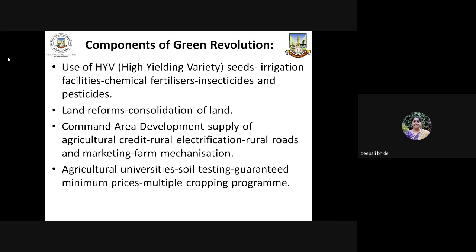All these changes were necessary to bring in a revolution in agricultural production. Simultaneously, there was development of agricultural universities which provide facilities of soil testing, helping farmers know better about their land and the water needs of their crops. Development of guaranteed minimum prices and multiple cropping programs were also changes necessary for making the Green Revolution successful.